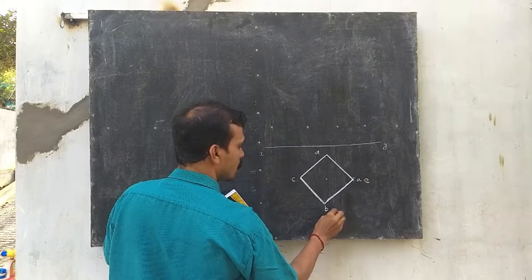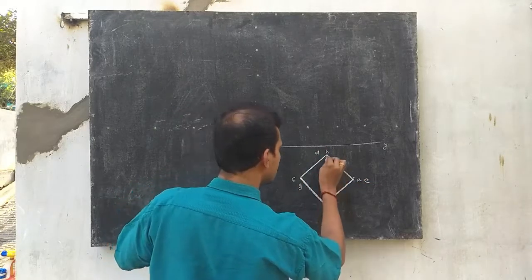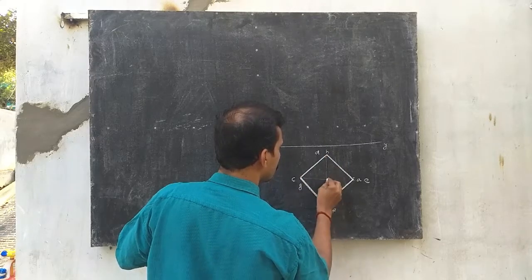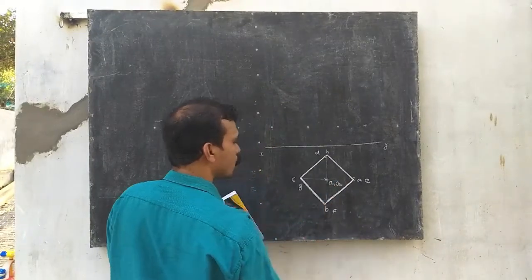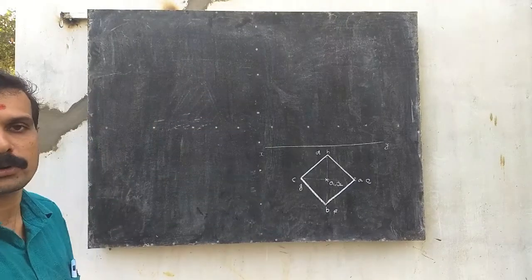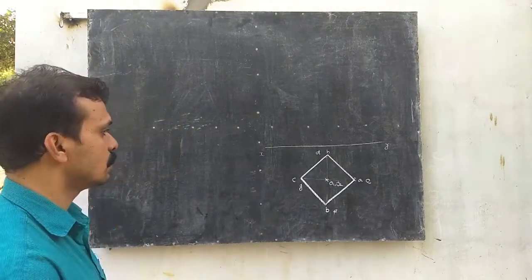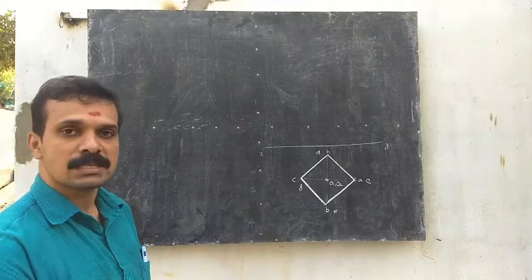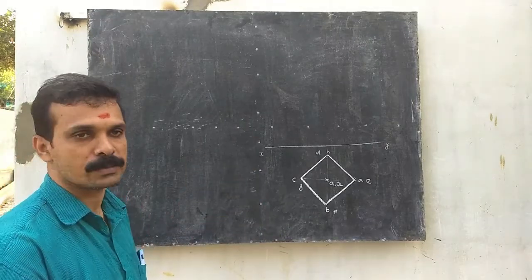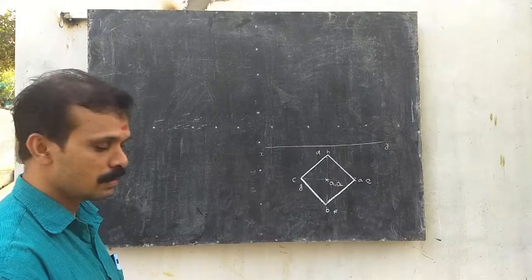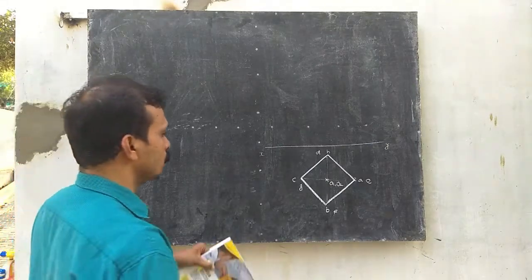Label the top view points as A, B, C, D, E, F, G, H, with O1 belonging to the top center and O2 belonging to the bottom center. From this we can construct the front view of the square prism. The height of the square prism is given as 70 mm.